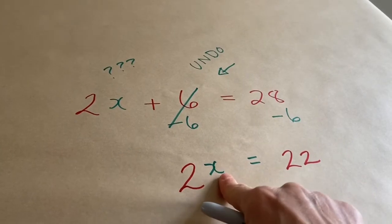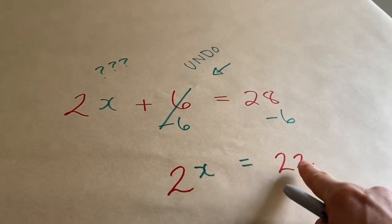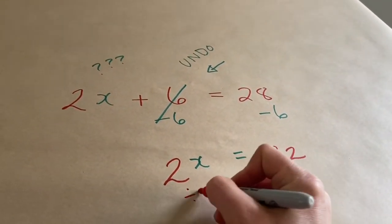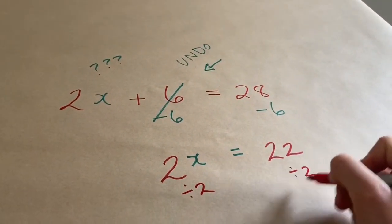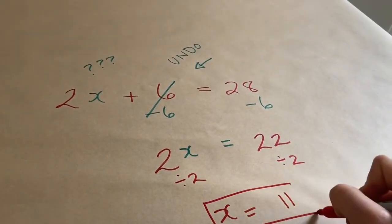So, now I have this x, the number I don't know, and I multiplied it by 2, and I got 22. I want to undo that or go backwards. So, I'm going to need to divide by 2. So, my x will be 11.